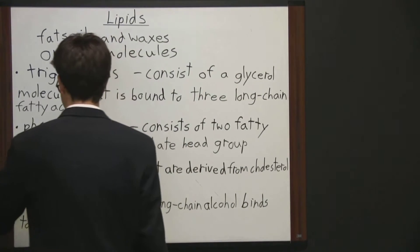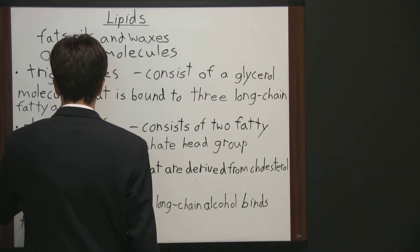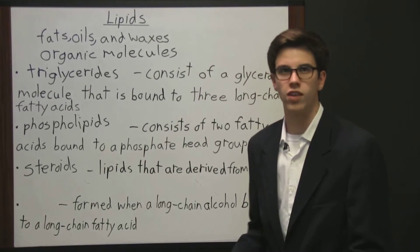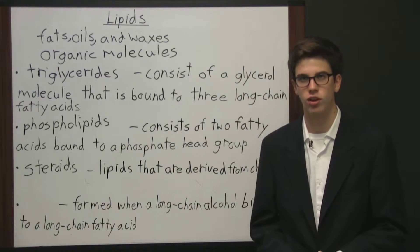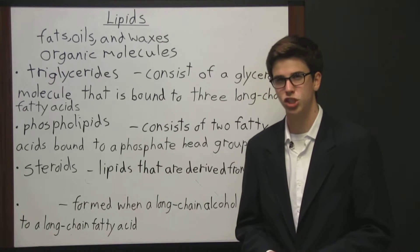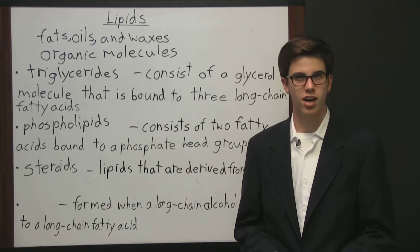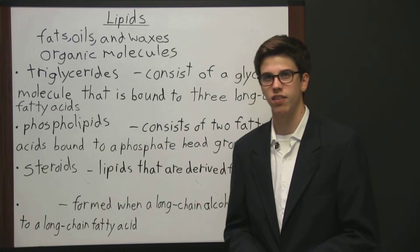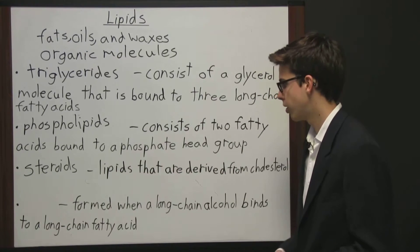A third group is steroids, which are lipids that are derived from cholesterol. Steroids have a four-ring structure with a hydroxyl group at one end and a short carbon chain at the opposite end. Cholesterol is also found in cell membranes and circulates in the blood. Another type of steroids are hormones.